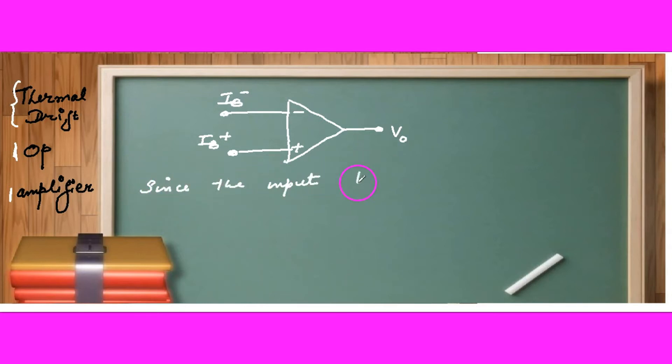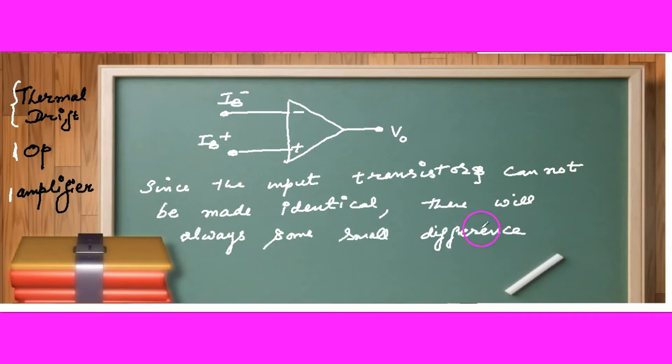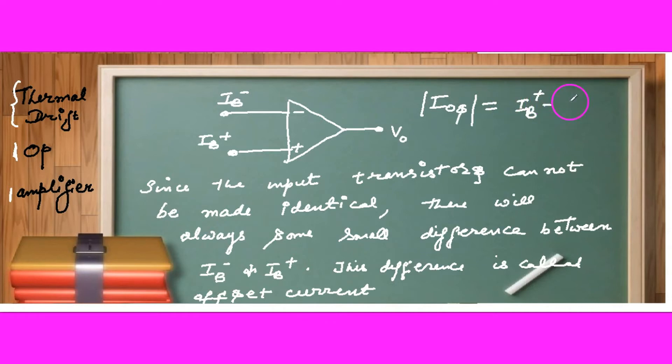Now we will understand what is offset current. You know the transistors with which the op amplifier is made up of, they could not be exactly identical. There will always be some difference between the characteristics of the two transistors. So IB minus and IB plus will not be equal and difference between the two bias current is called offset current. The input offset current.